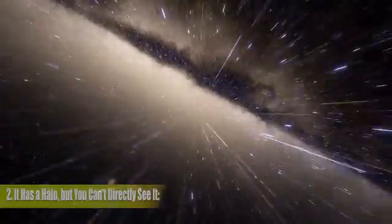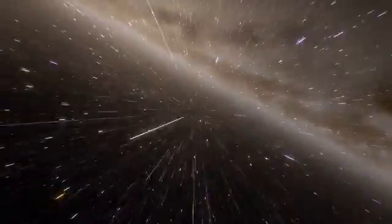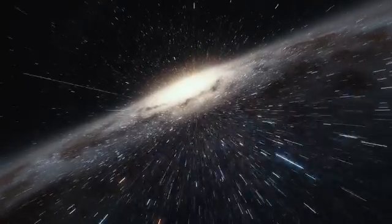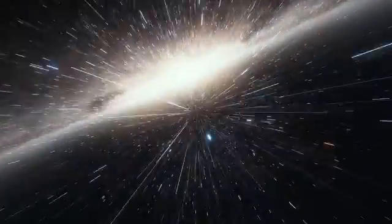2. It has a halo, but you can't directly see it. Our galaxy has a mysterious halo because, according to scientists, dark matter makes about 90% of its mass. Thus, fewer than 10% of the mass of the Milky Way is comprised of luminous matter, or that which can be seen with the unaided eye or via a telescope.